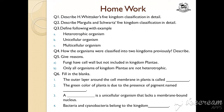Question four: how were organisms classified into two kingdoms previously? Describe and give reasons. Also: fungi have a cell wall but are not included in kingdom Plantae — why? Give the reason. Number two: not all organisms of kingdom Plantae are heterotrophic — if they are not heterotrophic, what are they and what do they do? Give the reason.